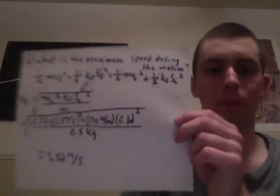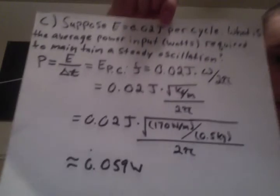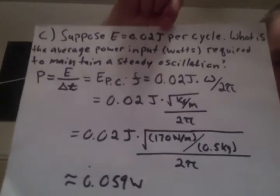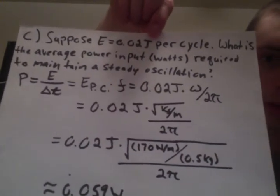The final part gives us the assumption that our energy is 0.02 joules per cycle. What is the average power input in watts required to maintain a steady oscillation?